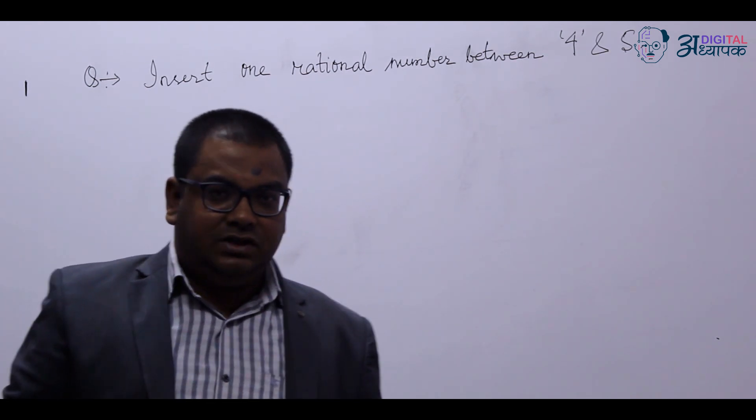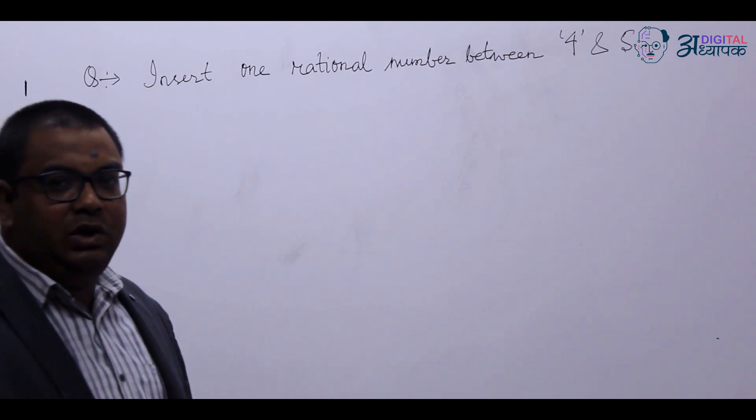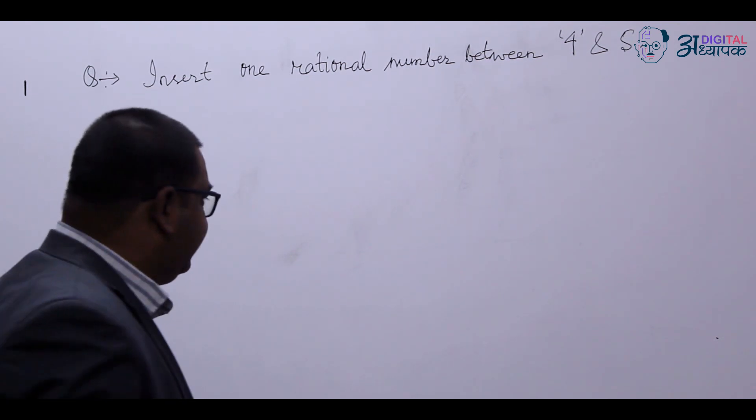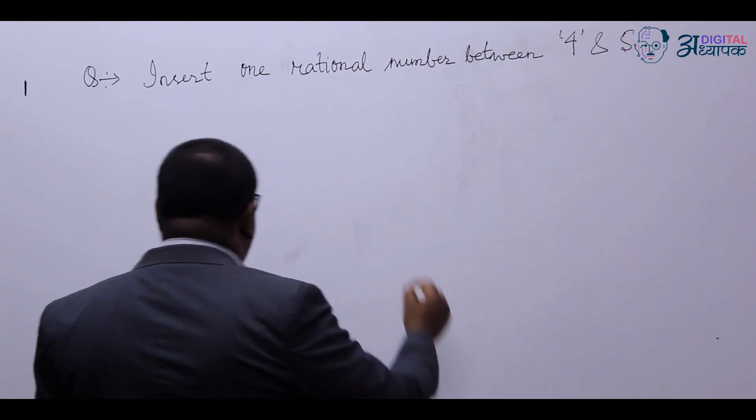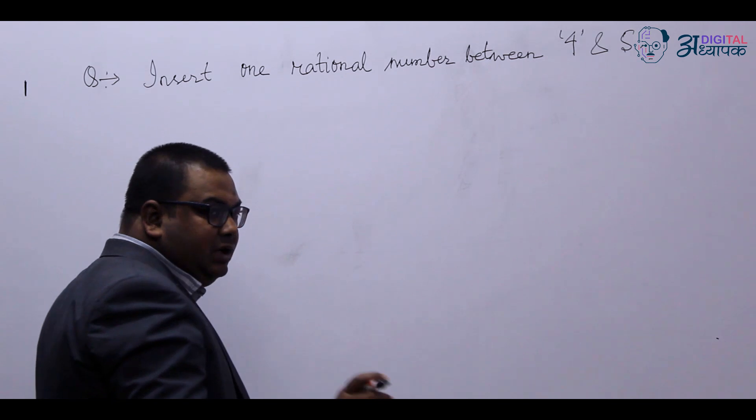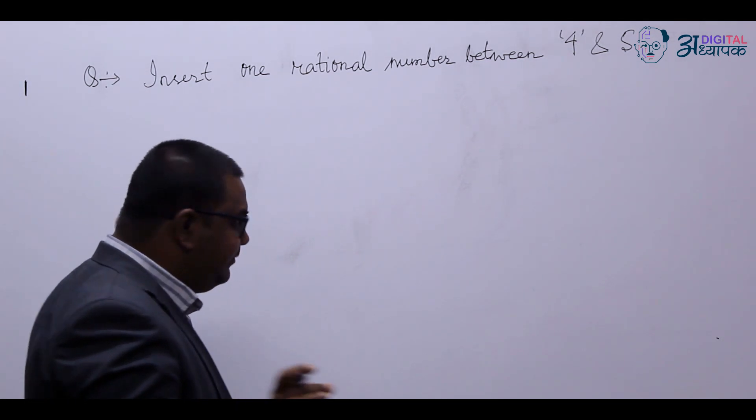Anywhere if you get such a question where we have to insert only one rational number between given two rational numbers, the simplest way is to add up both numbers and then divide by 2, and you will get the rational number in between them.